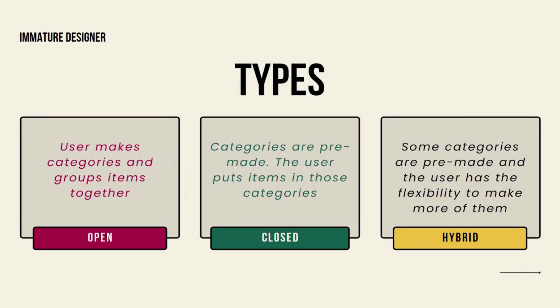The user adjusts everything according to their own thinking. After that, it's your duty to ask the user why they formed those groups, why they kept certain items together, whether some items were difficult to place, and whether some items ended up ungrouped. You can ask them why they felt those items didn't belong to any group. These follow-up questions are asked after the research session.